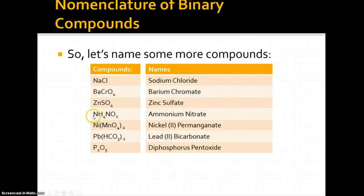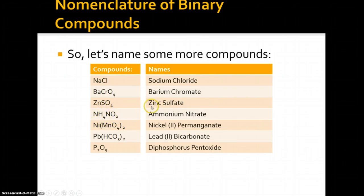NH4NO2 is still named as an ionic compound — it's a salt — so that's ammonium nitrate. Whenever ammonium is involved, we treat ammonium as though it's a metal and NO2 as the nonmetal, and we name it as a salt. Ionic bonds are normally formed between a metal and a nonmetal, and this holds through all these examples. The only exception here is P2O5, which is not ionic — it's covalent — so we call it diphosphorus pentoxide.